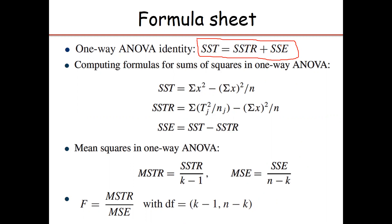The SSTR is the variation due to the known source and SSE is the variation due to the unknown source. Adding the variation due to known and unknown sources gives the total variation. This identity is known as splitting the total variation into its components — that is why it is called analysis of variance. We are splitting the total variation of the data into two components: variation due to the known source and variation due to the unknown source.